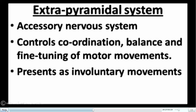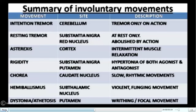The extrapyramidal system — also called the accessory nervous system — does not initiate movement itself but controls coordination, balance, and fine-tuning of motor movements produced by the pyramidal system. Lesions present as involuntary movements rather than focal neurological deficits. Intention tremor is a feature of cerebellar involvement — present only on action. Resting tremor is a classical feature of substantia nigra and red nucleus involvement in Parkinson's disease — present at rest and abolished by action.